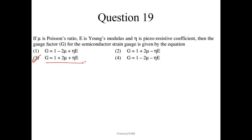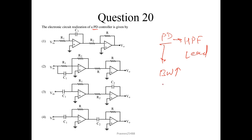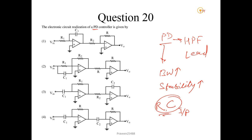Question number 20. The electronic circuit realization of PD controller — P for proportional and D for differentiator. The PD controller gives a high pass filter circuit with lead characteristics. Its advantages are it increases bandwidth and also increases stability. You will see the RC (resistor and capacitor) at the input. Option 2 is the correct answer.